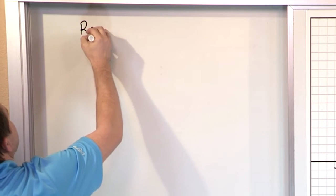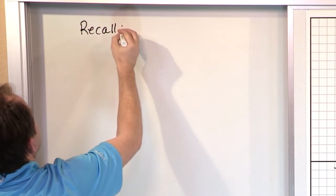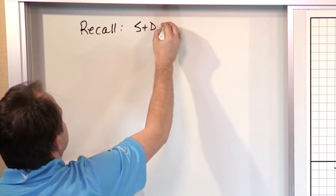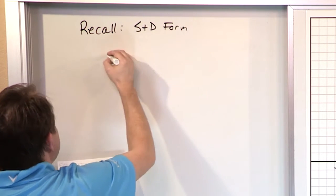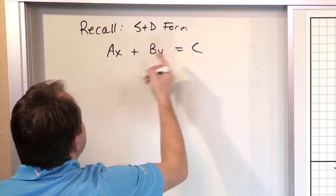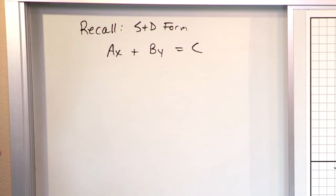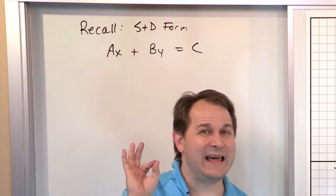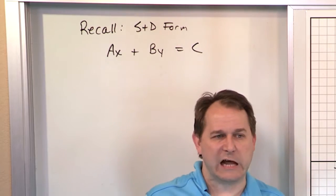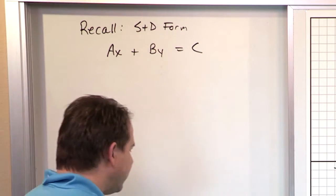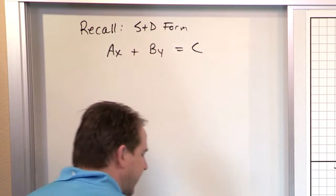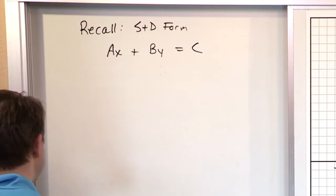Recall the following. Remember we talked about standard form — the standard form of an equation of a line is ax plus by equals c. Now a, b, and c can be any number: negative numbers, positive numbers, or zero. By putting a, b, and c as different values, we're going to have different equations of lines and different graphs that come out.